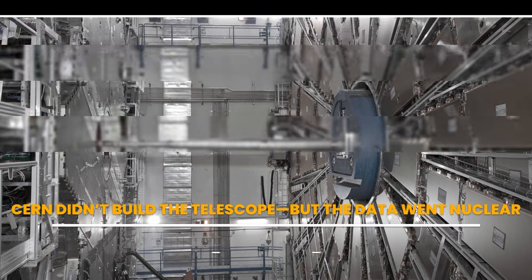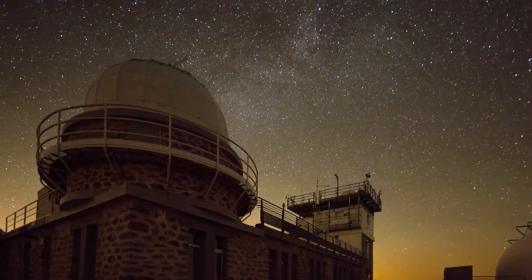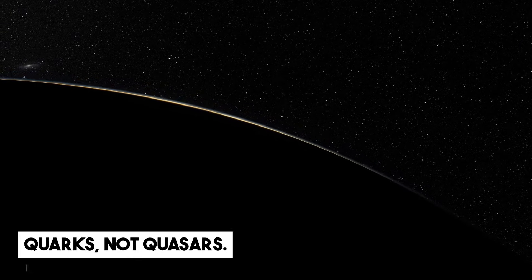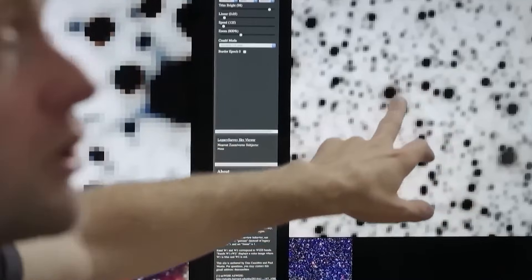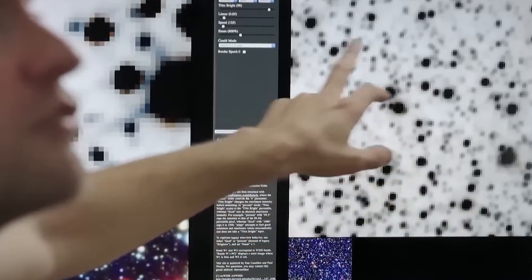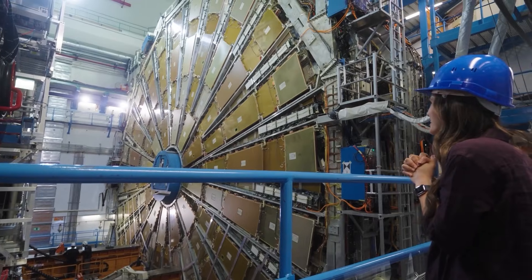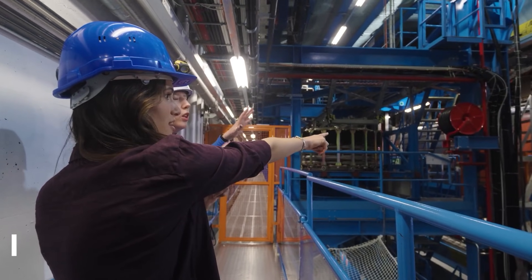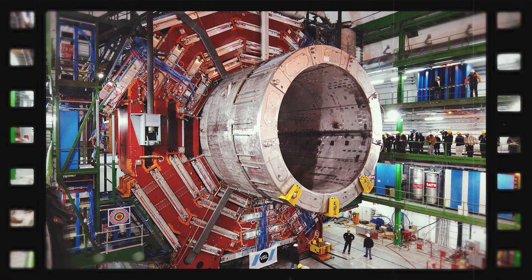CERN didn't take the images. They didn't scan the skies or track a drifting object in the void. Their detectors study quarks, not quasars. But in the chaos of headlines and social media feeds, that distinction disappeared. Here's what really happened. The Taiwan team released their Planet 9 analysis through Zenodo, a CERN-hosted open-access archive used by scientists worldwide. It was simply a platform. Neutral. Passive. Technical. But to the public, CERN's name meant authority.